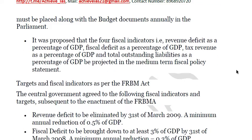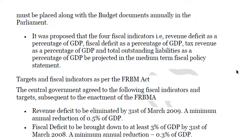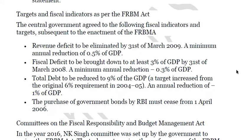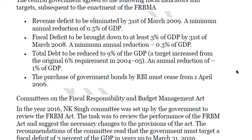Various targets were set: the revenue deficit had to be eliminated by 31st March 2009, with a minimum annual reduction of 0.5% of GDP. The fiscal deficit was to be brought down to at least 3% of GDP by 31st March 2018, with a minimum annual reduction of 0.3% of GDP. Obviously, these targets have not been met as yet.